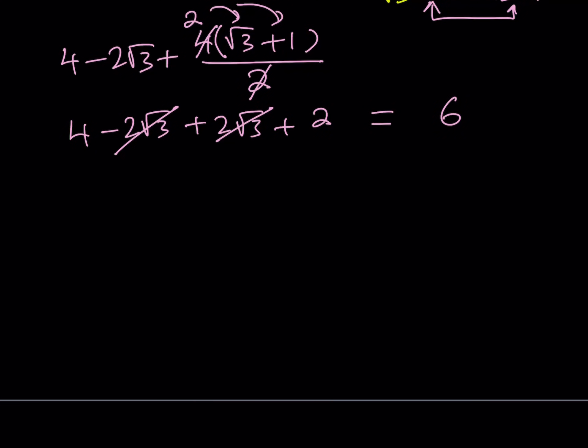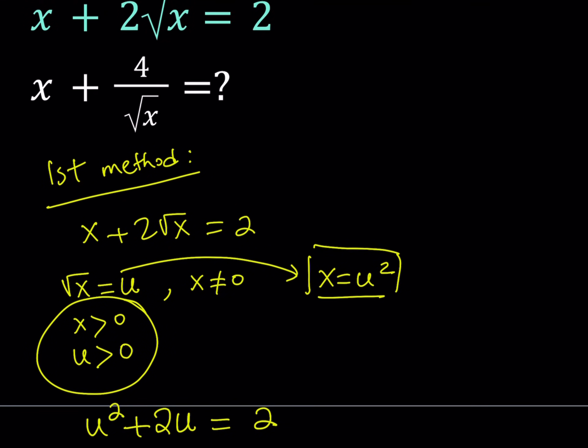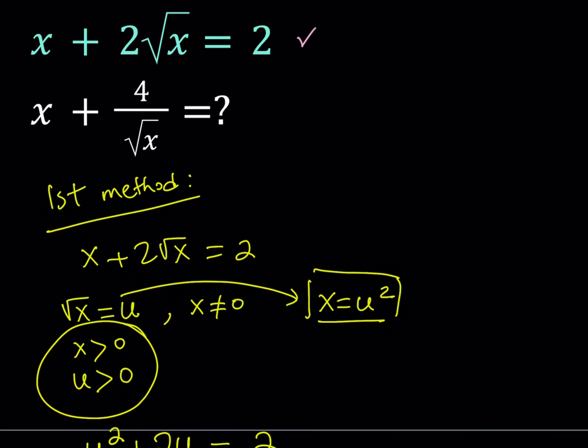So, our expression is equal to 6 given the equation. So, we're given that x plus 2 root x is equal to 2, and this becomes 6. Great. So, that gave us a really nice answer as an integer.